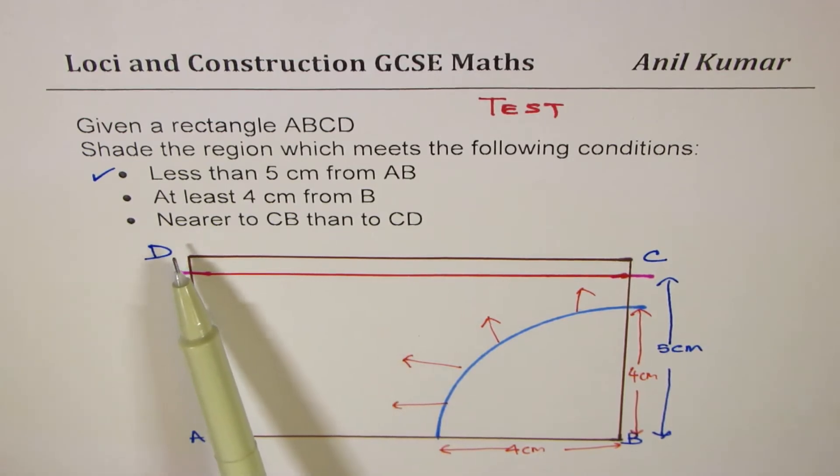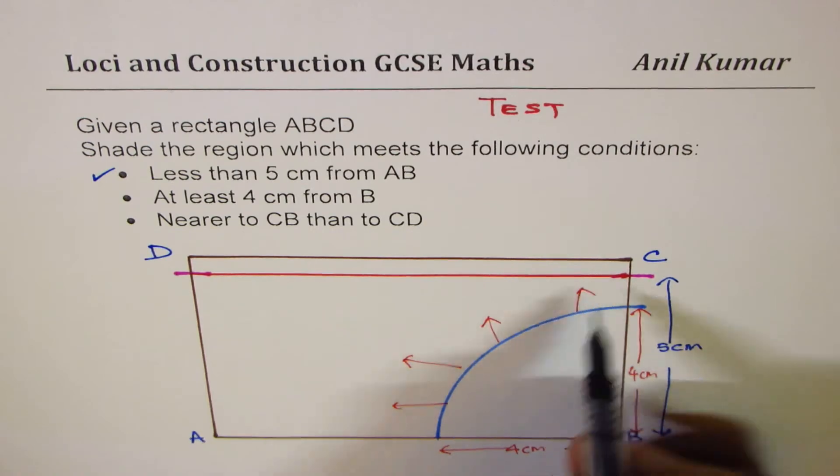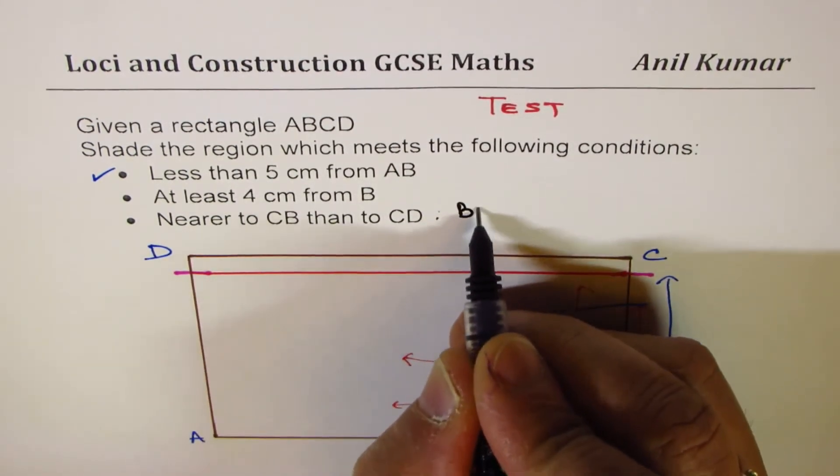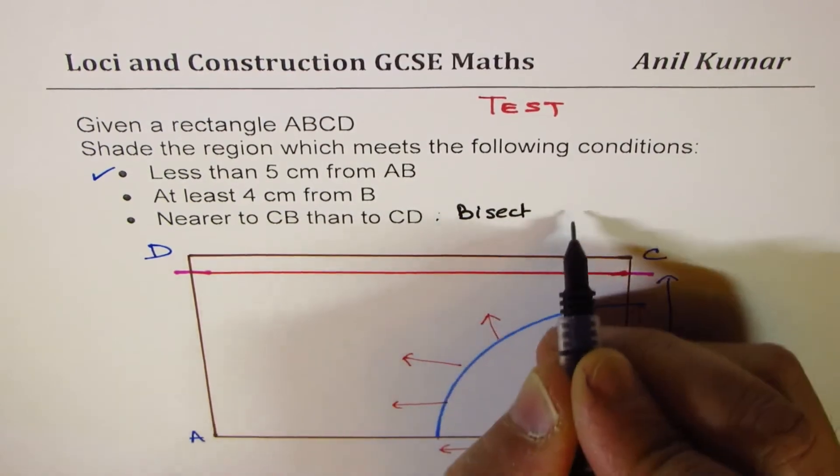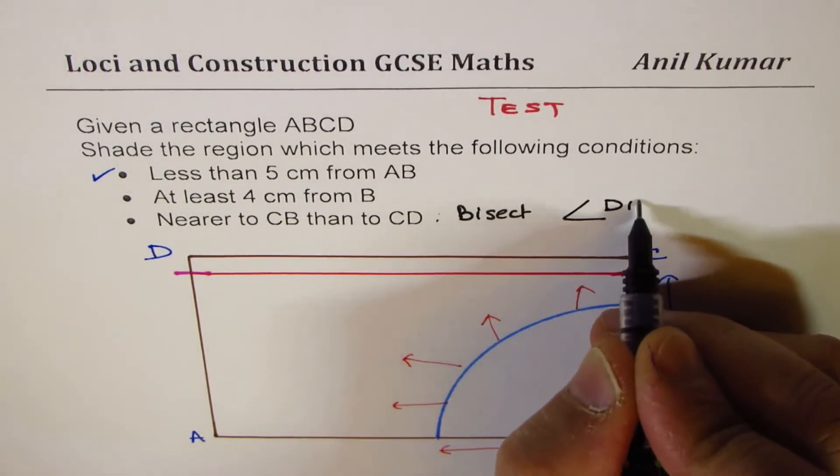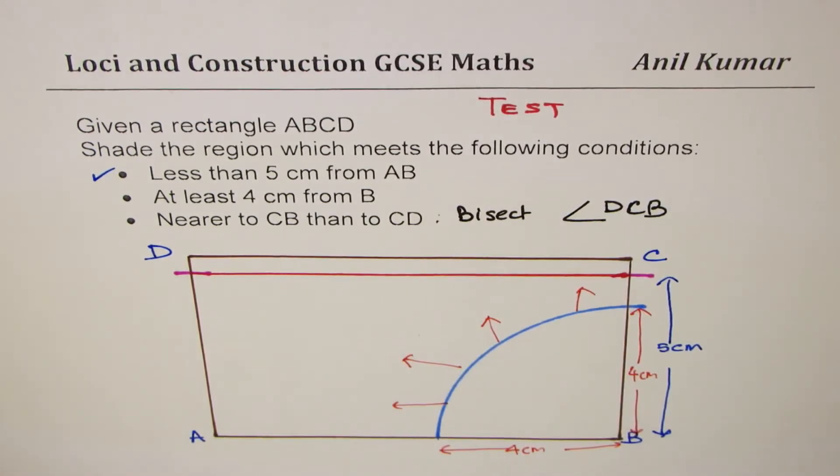The last thing here is, nearer to CB, means this side, than to CD, that side. So if it has to be nearer, we have to do what? Well, in that case, we have to find the bisector of angles. So we have to bisect angle DCB. That's what we have to do now. So how do we do that? We learned how to bisect an angle.